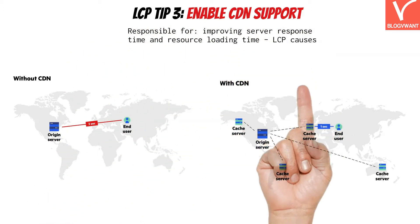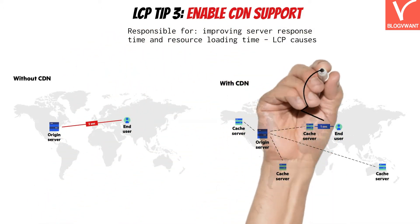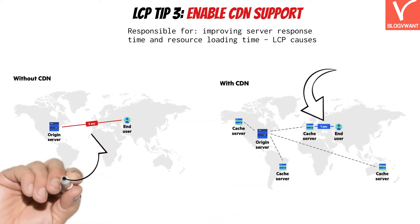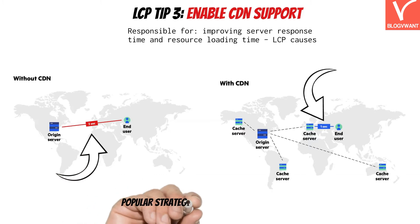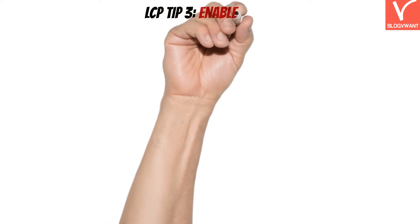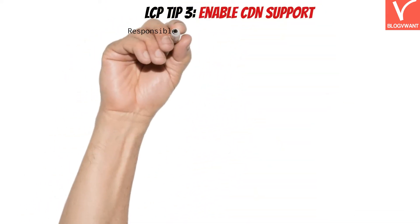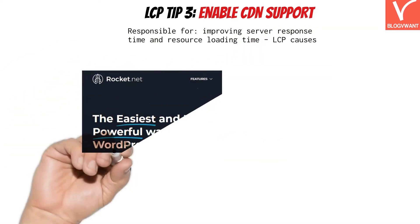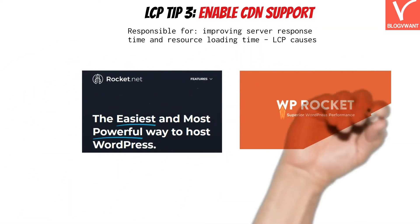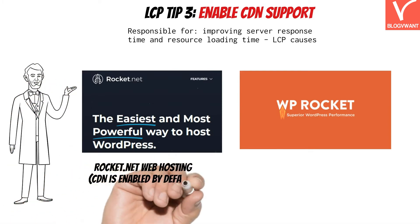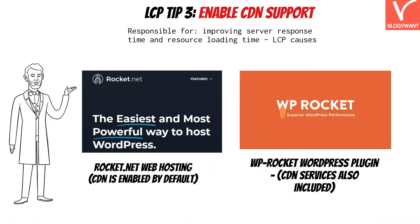When a hosting server is located elsewhere than a reader's location, the server takes more time than usual to transfer content. But by enabling the CDN service, your readers receive content from nearby servers rather than your globally situated server. To enable a CDN service, either go for hosting services that offer CDN by default like Rocket.net, or install the WP Rocket WordPress plugin, which has its own dedicated CDN service that can be configured easily.